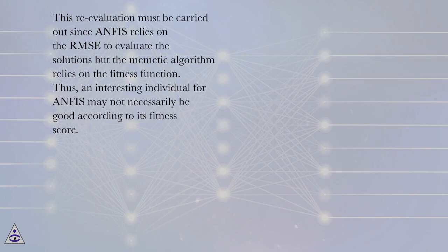This re-evaluation must be carried out since ANFIS relies on the RMSE to evaluate the solutions but the memetic algorithm relies on the fitness function. Thus, an interesting individual for ANFIS may not necessarily be good according to its fitness score.